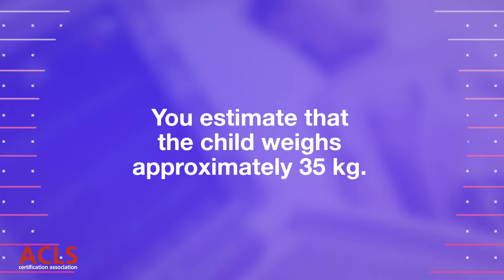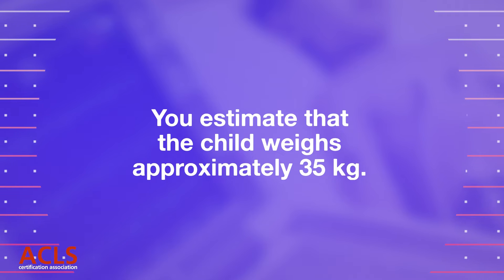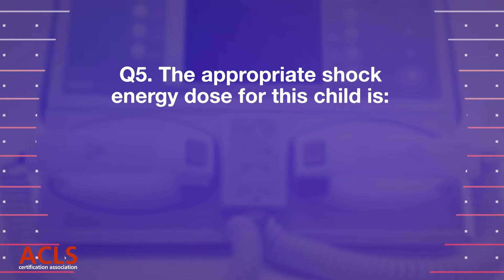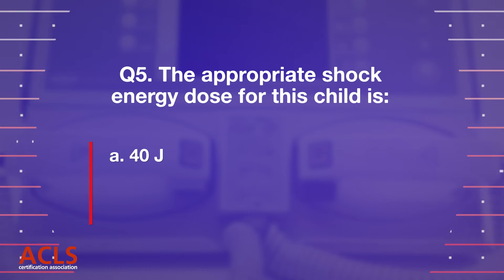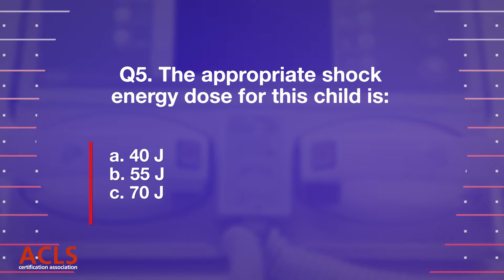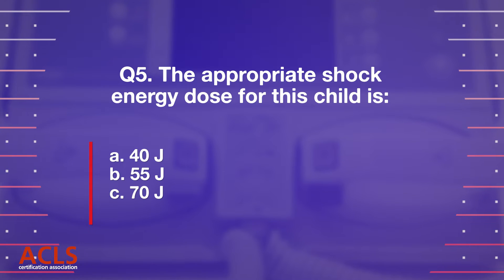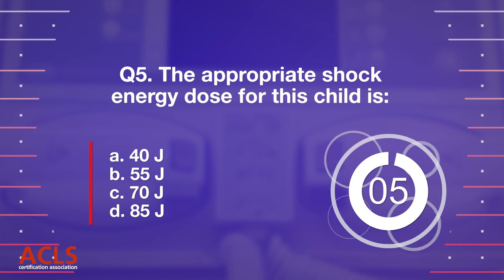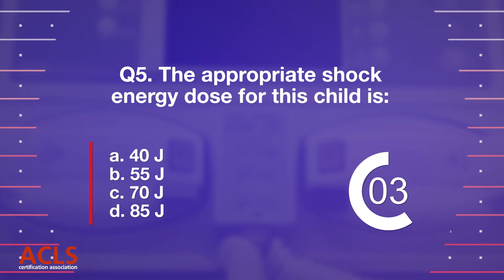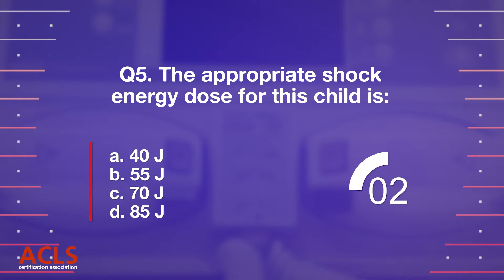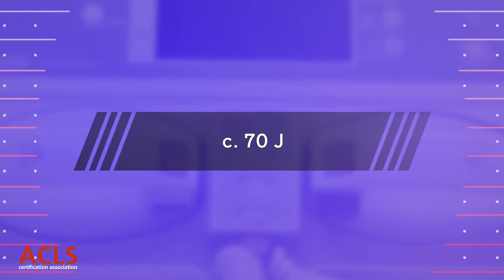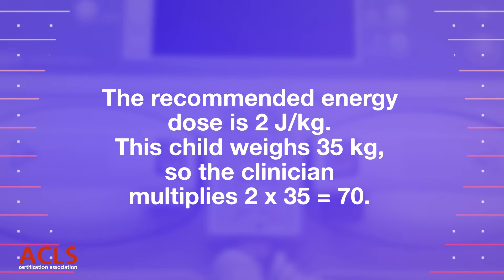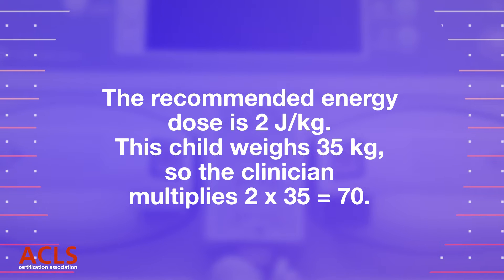You estimate that the child weighs approximately 35 kilograms. Question 5: The appropriate shock energy dose for this child is: A) 40 joules, B) 55 joules, C) 70 joules, D) 85 joules. Correct answer: C) 70 joules. The recommended energy dose is 2 joules per kilogram; 2 × 35 = 70.